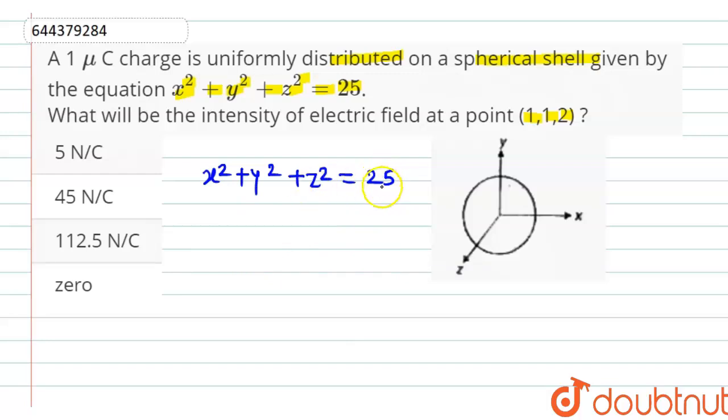here the value of r is 5 because x² + y² + z² will be equal to r². And therefore, here the value of r is 5 because square root of 25 will be equal to 5.